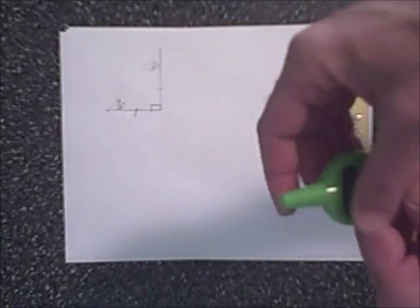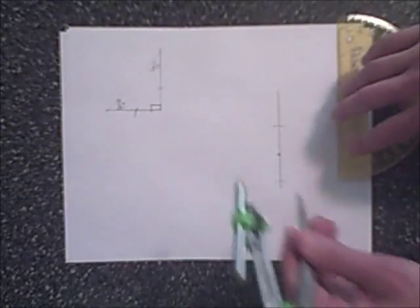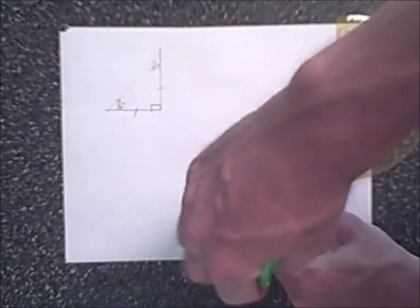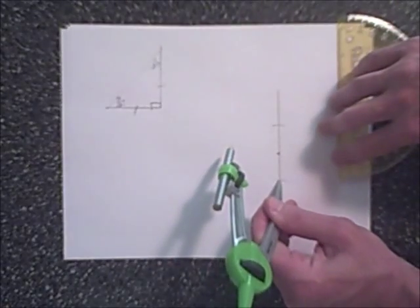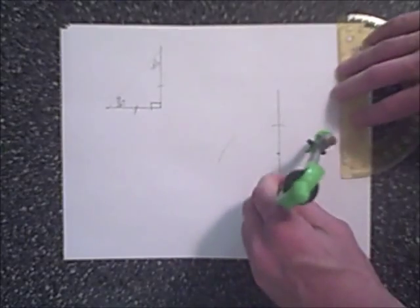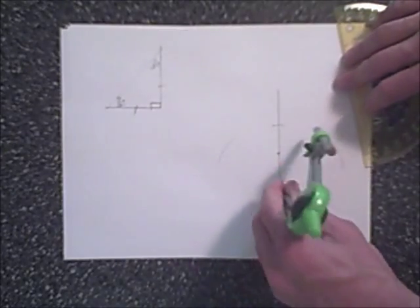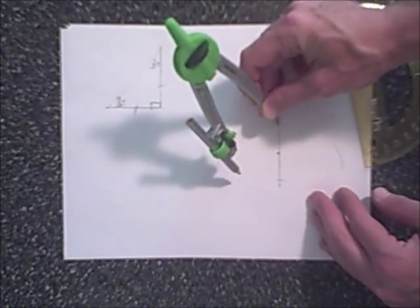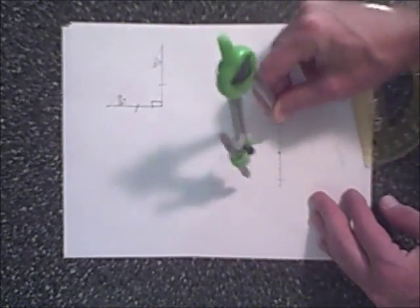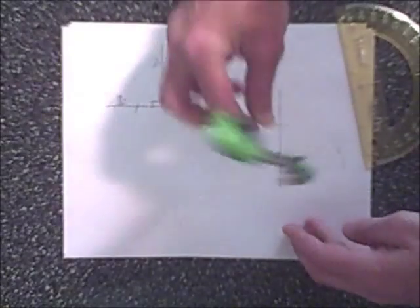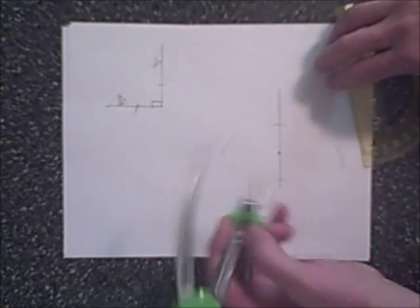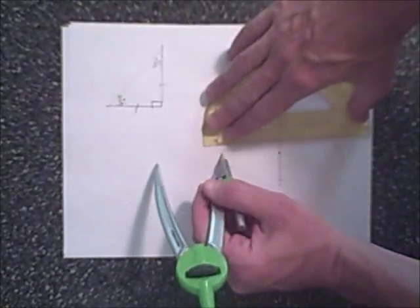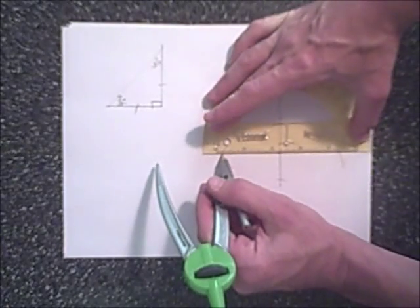And then what we'll do is we'll take our compass again, and using the first endpoint, we will sketch an arc up here and an arc below, and then going to the other endpoint, we will sketch an arc above and an arc below, and then we will connect these intersecting arcs with a long line segment.